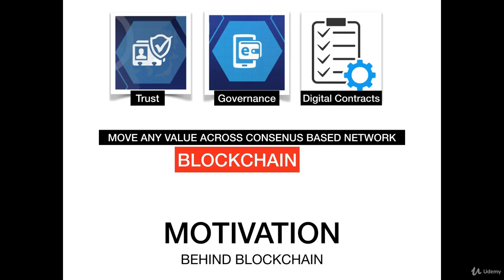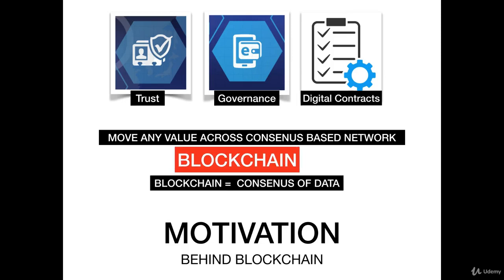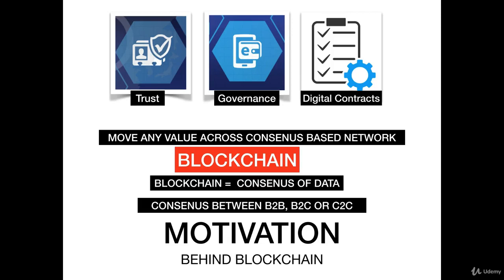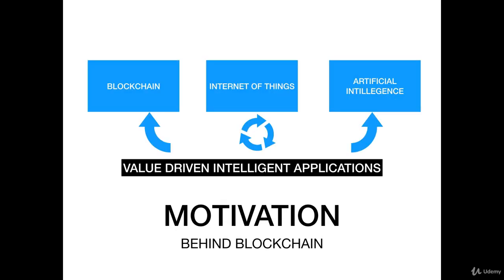We view blockchain as an enabler to provide consensus of data. The consensus can be between business to business, business to consumer, or consumer to consumer. We call blockchain an enabler because blockchain alone will not lead to realizing these opportunities. The combinatorial power of blockchain, smart contracts, and technologies like IoT and artificial intelligence would enable delivery of value-driven, intelligent applications.